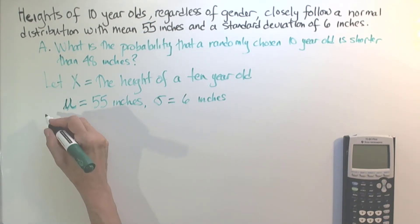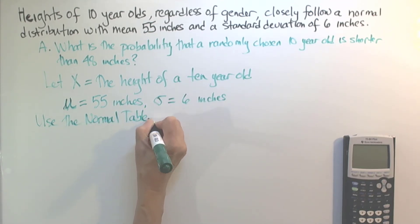In the statement of this problem, we're told to use the normal table. One of the things you'd want to pay attention to as you're going through the problems is whether to use the normal table or whether to use StatCrunch. If it specifically states to use the normal table, then do so, otherwise you'll be using StatCrunch. But in this case, we're going to use the normal table.